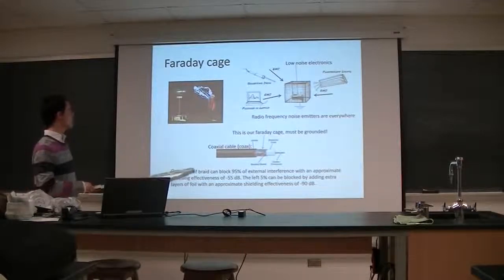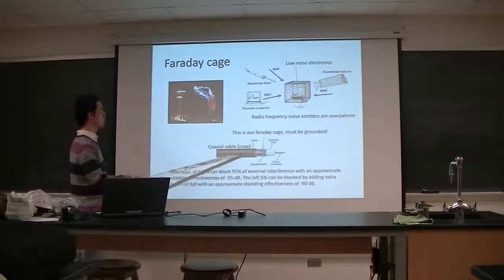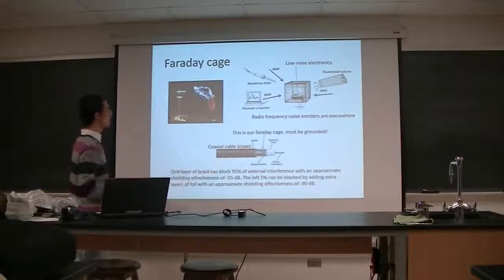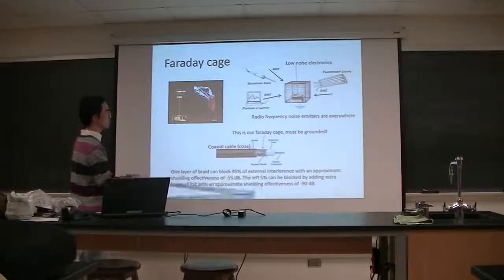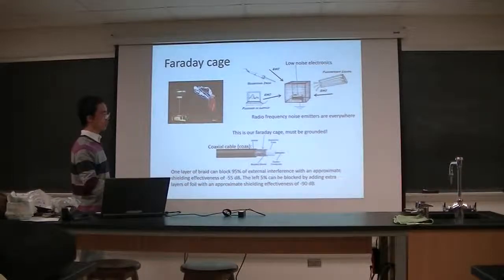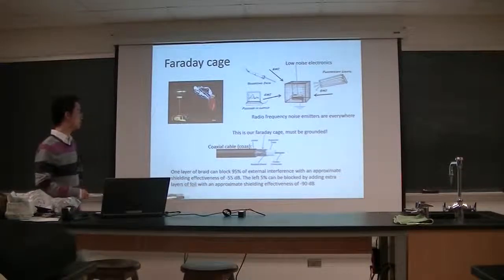So one layer of braid can block 95% of the external interference. If you improve this part, you can get the left 5% also blocked with an even better blocking rate.